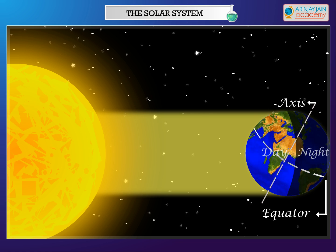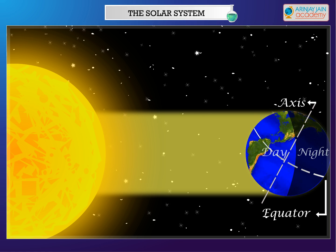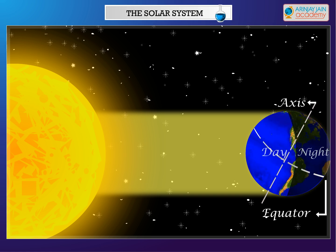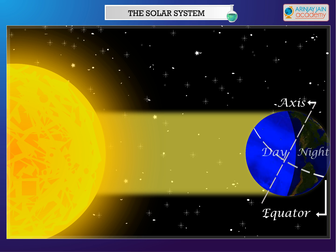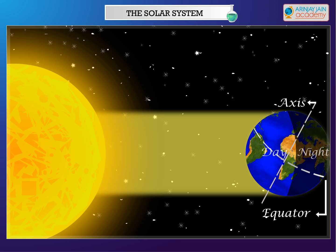As the Earth rotates, the half that faces the sun receives sunlight and has day, while the other half remains in darkness as it does not receive any sunlight. This part has night.